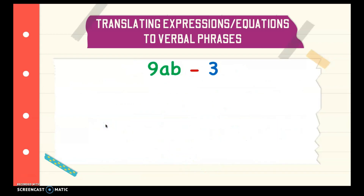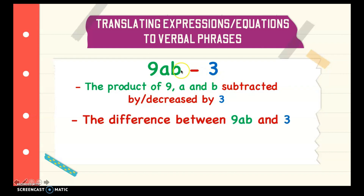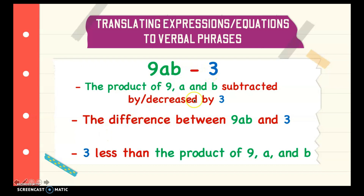Next we have 9ab minus 3. This 9 here is being multiplied by a and b. So we can say the product of 9, a, and b subtracted by, or decreased by 3. Or you can also say the difference between 9ab and 3. And if you want to use less than or subtracted to, you may start with 3: 3 less than the product of 9ab.